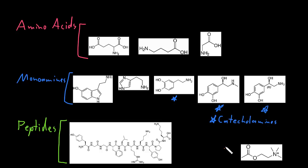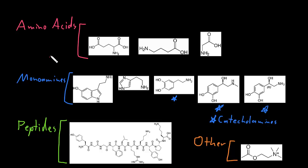There are many other types of neurotransmitters that are not amino acids, monoamines, or peptides, and I'll just call this category "other" — the other molecular types of neurotransmitters. Now I'm going to introduce some important neurotransmitters in these different groups and mention some of their functions, though we'll come back to all of that in other videos.